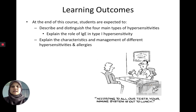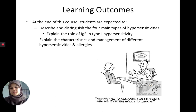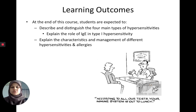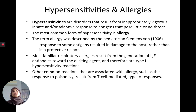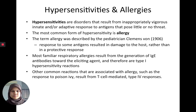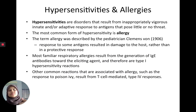At the end of this lecture you're expected to be able to describe and distinguish the four main types of hypersensitivities. Specifically, type 1 hypersensitivity — we'll spend a bit more time on that — and we're going to talk about the role of IgE, then the characteristics and management of different hypersensitivities and allergies. Hypersensitivities are basically disorders that result from an inappropriately vigorous innate or adaptive response to antigens that pose little or no threat — our immune system recognizes them as threatening, over-responds, and damages our tissues in the process.